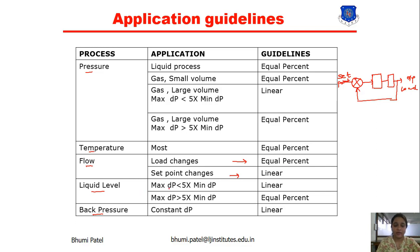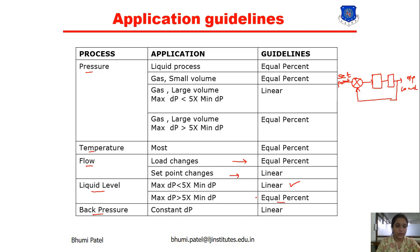For liquid level, there are two categories. First, where the maximum differential pressure is less than 5 times the minimum differential pressure — for that, we use equal percentage characteristics. Second, where the maximum differential pressure is greater than 5 times the minimum differential pressure — for that, we also use equal percentage.